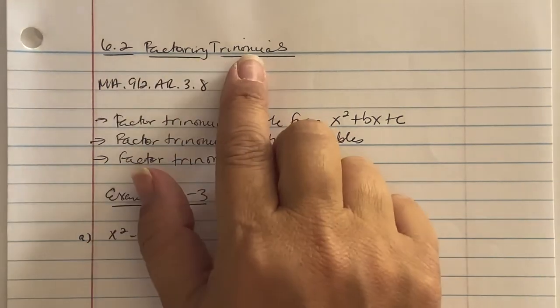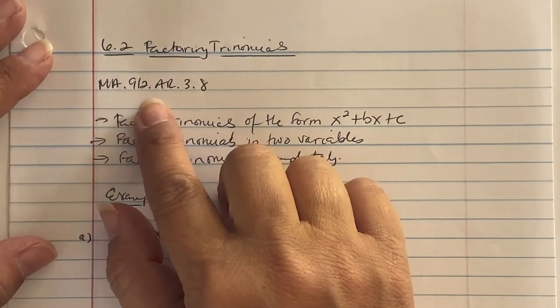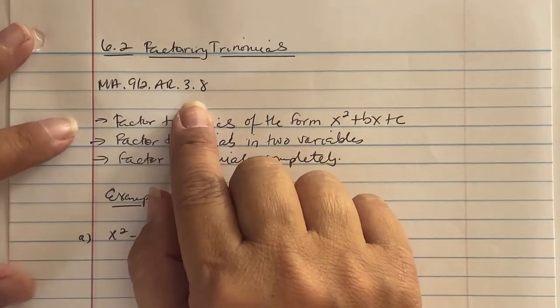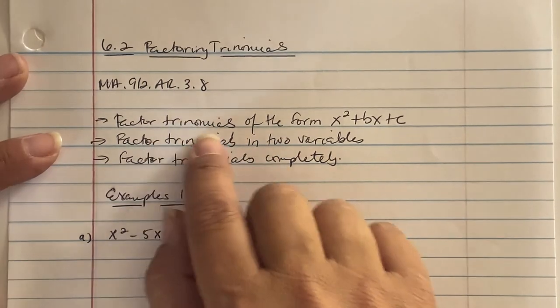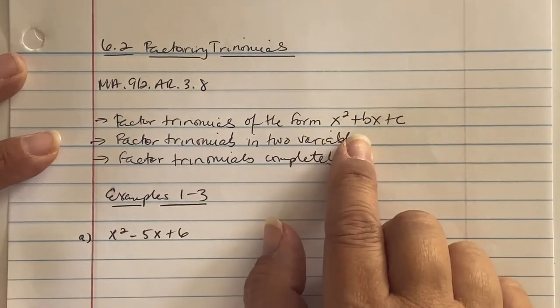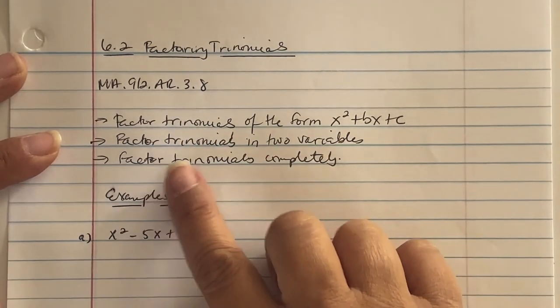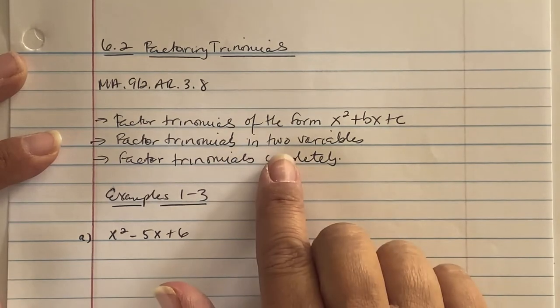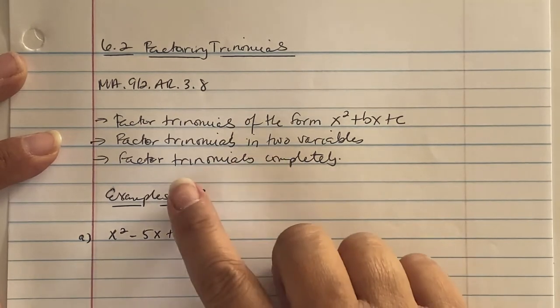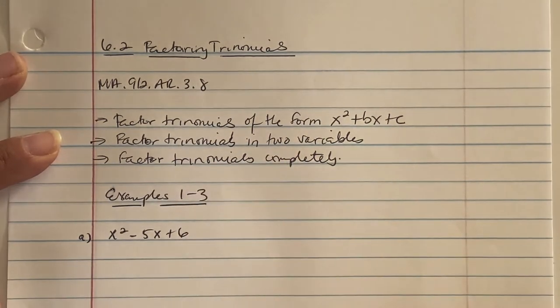Okay, 6.2 factoring trinomials — MA.912.AR.3.8. We are going to factor trinomials of the form x² + bx + c, factor trinomials in two variables, and factor trinomials completely.